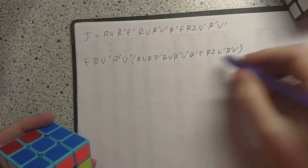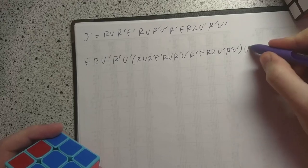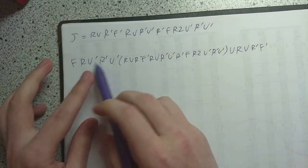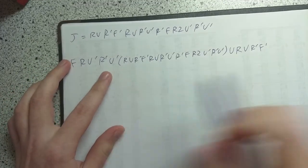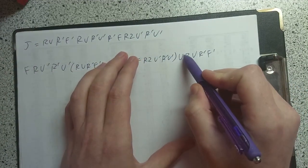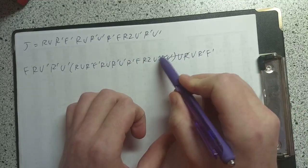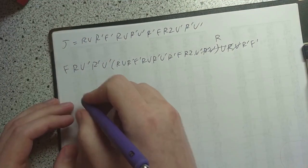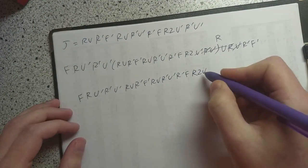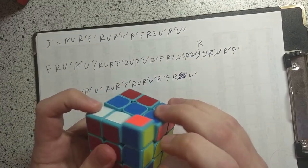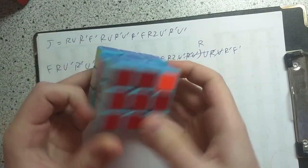At the end we'll do the inverse of the conjugate, which is U R U R' F'. At the start it looks like an unnecessarily long setup move because it doesn't cancel any moves. But once we get to the end, a lot of moves cancel: this U' cancels with this U, this R' cancels with this R, this U' cancels with this U, and R2 R' is just R. And it does work.